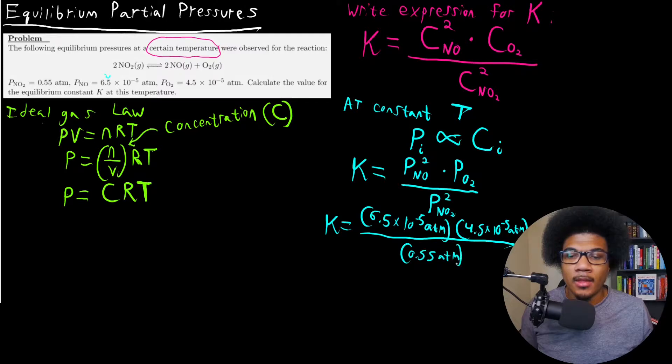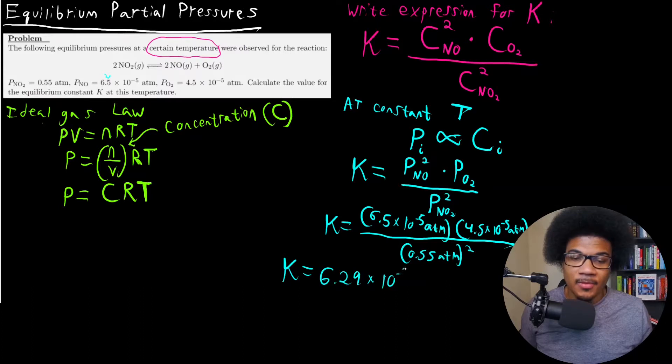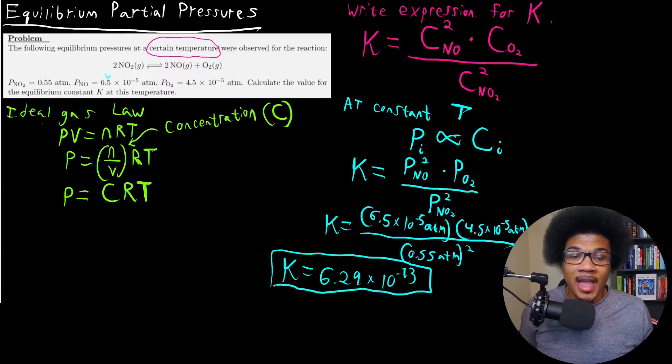So that gives you a final value of K of 6.29 times 10 to the negative 13. So this is our value for the equilibrium constant calculated from the partial pressures. Now, let's interpret this K value. So K is much, much less than 1 in this case.